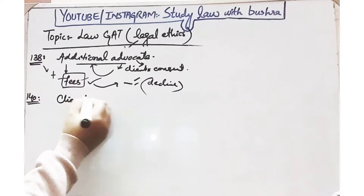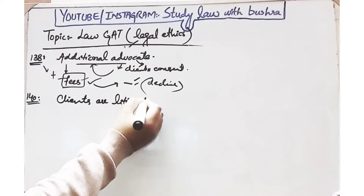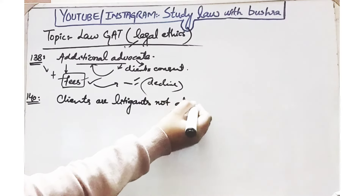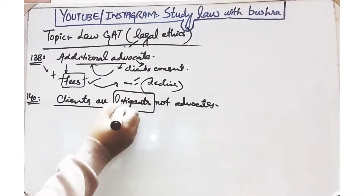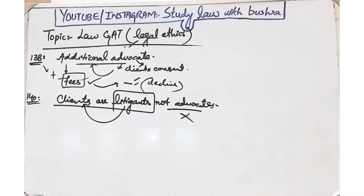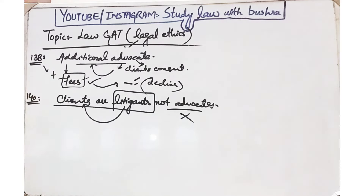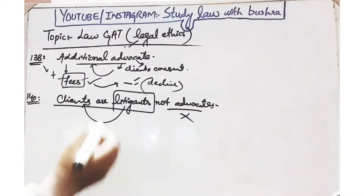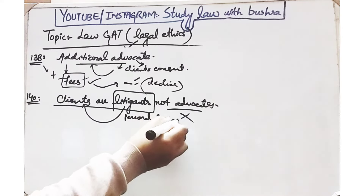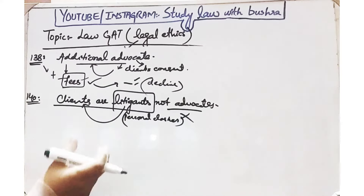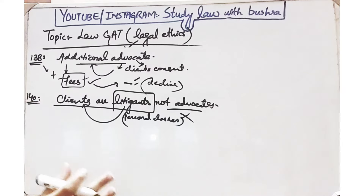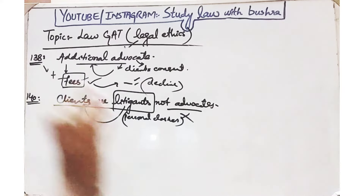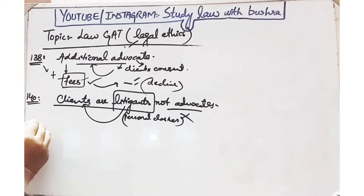Rule 140 kehta hai: clients are the litigants, not advocates. Jhagda clients ke darmiyan hai, do parties ke darmiyan dispute arise hua hai — advocate sirf apni parties ko represent kar rahe hain. Agar clients ke darmiyan kisi bhi kisam ka jhagda hai, to is se advocate ke conduct par kisi tarah ka koi asar nahi hona chahiye. Advocates apne personal clashes ko bilkul side par rakhte hue kaam karenge — personal clashes ki wajah se client ke case mein koi delay strictly avoid kiya jana chahiye.